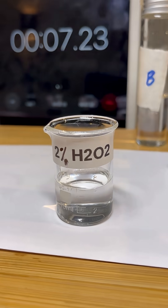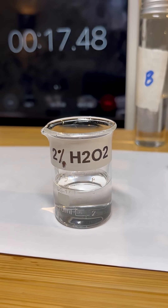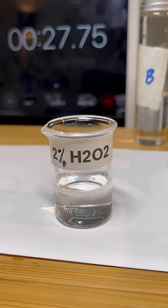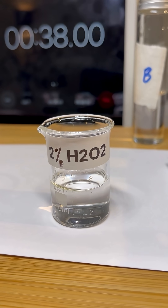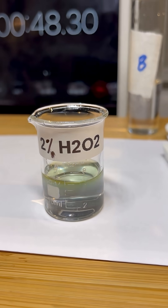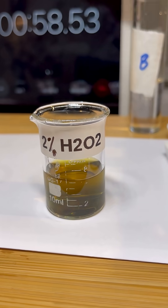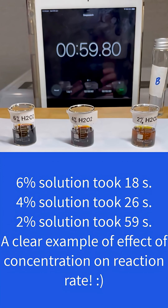We repeat the experiment with 4% acidified peroxide solution and then 2% acidified peroxide solution and record the time for each colour change. We found the 6% solution took 18 seconds to change colour, the 4% solution took 26 seconds and the 2% solution took 59 seconds.